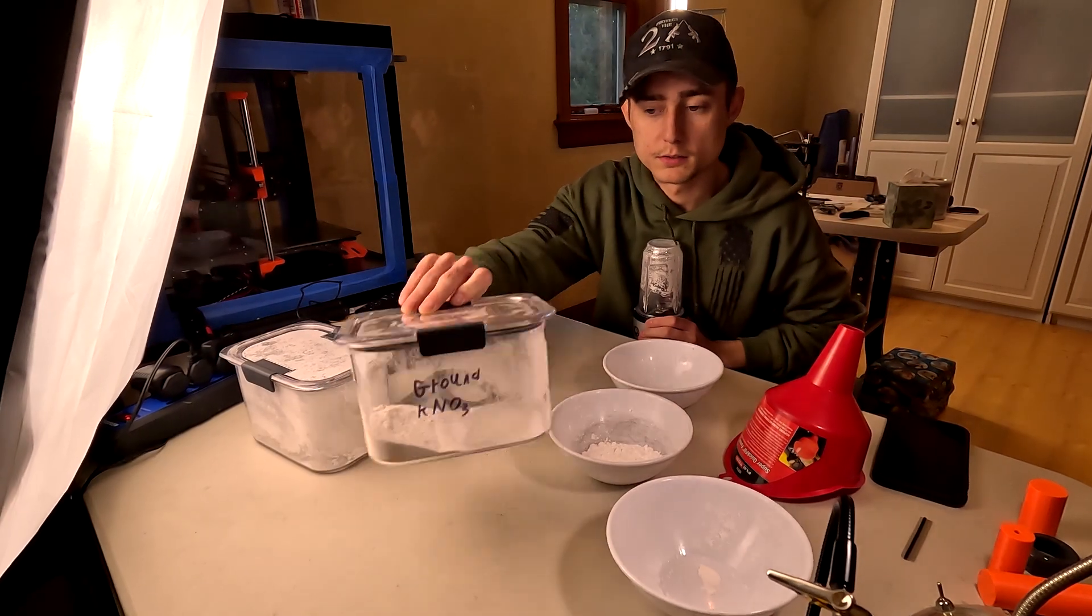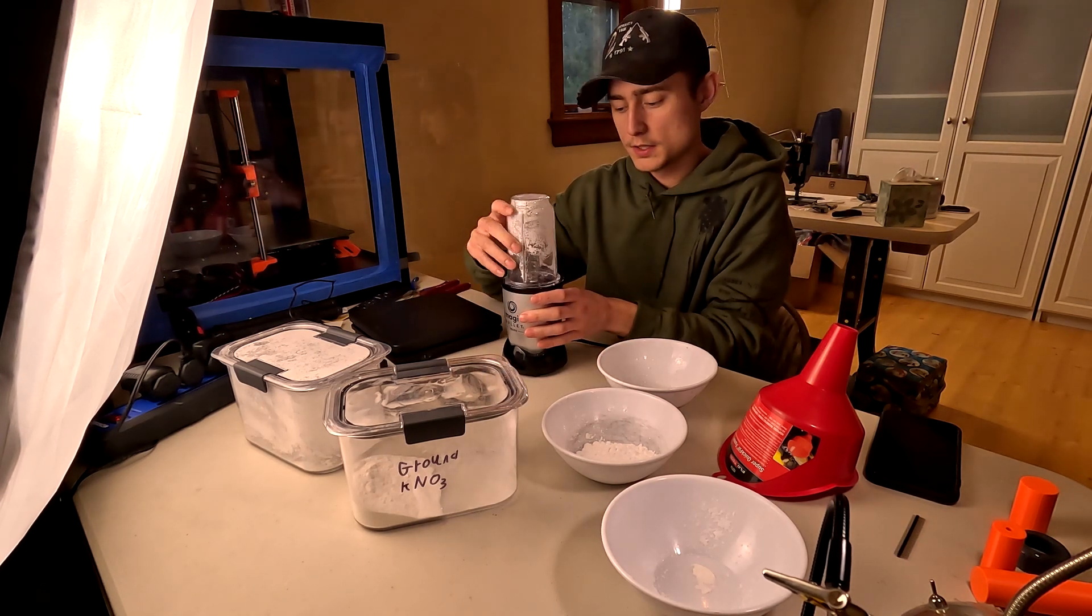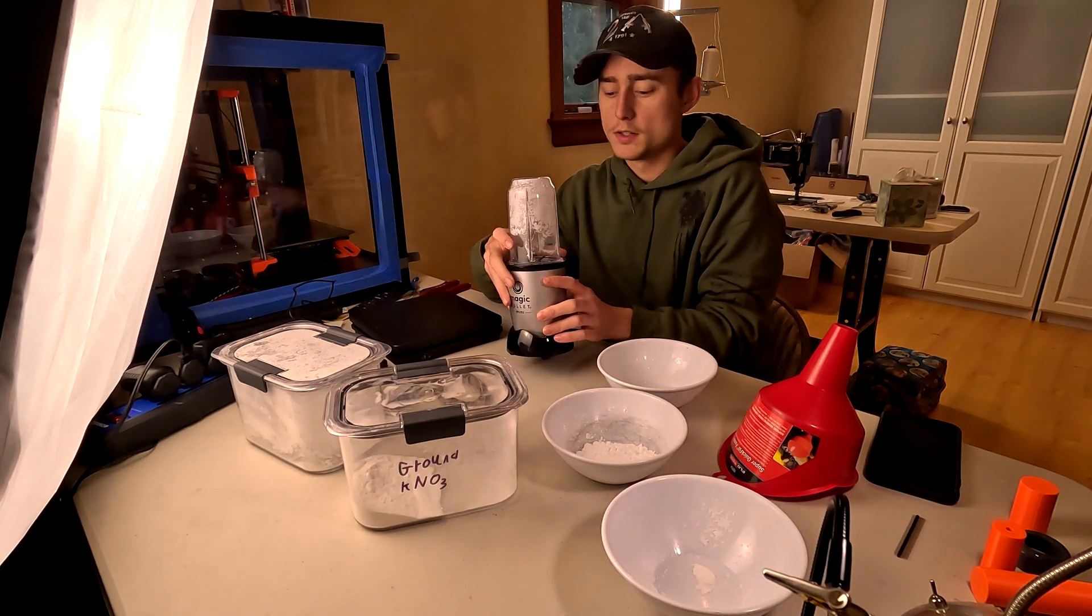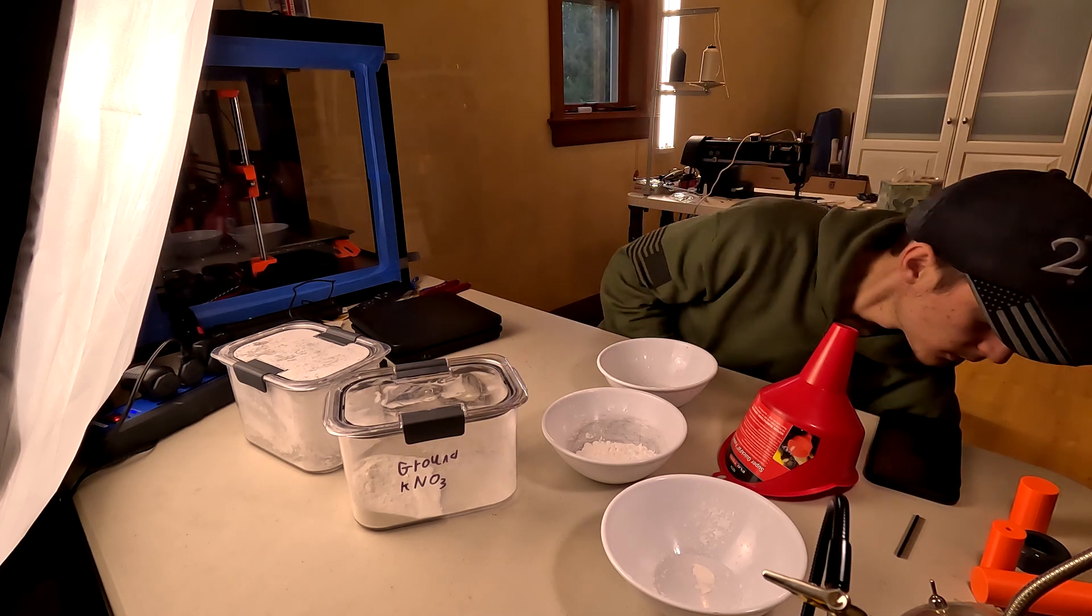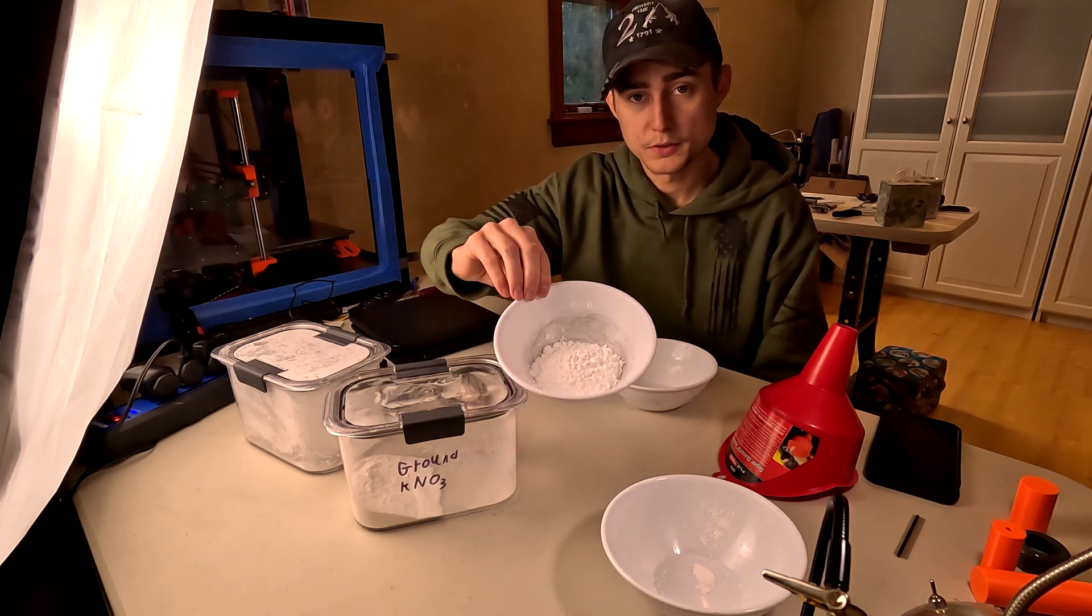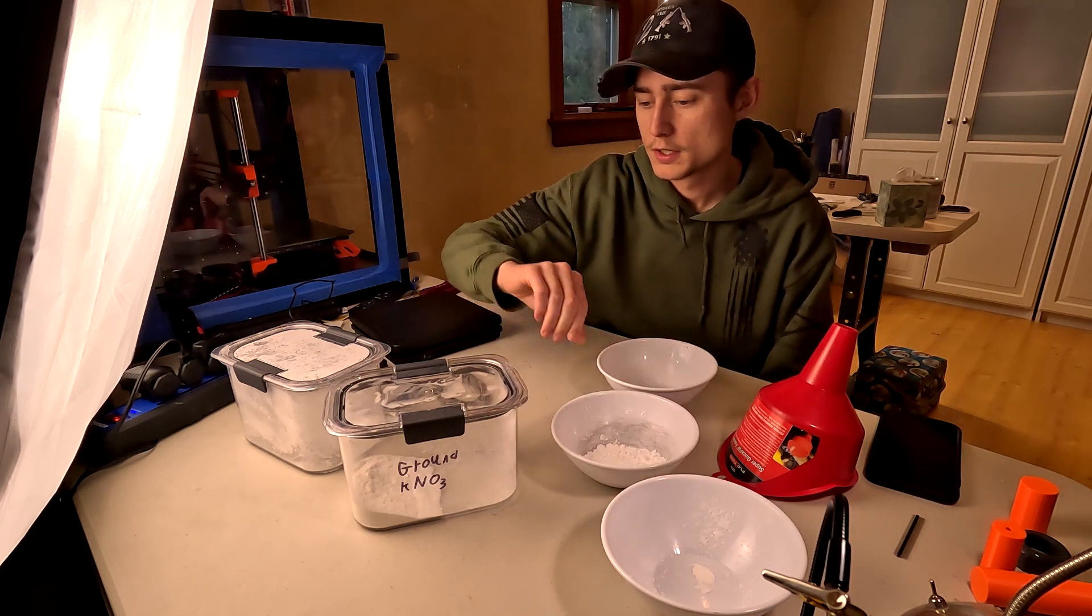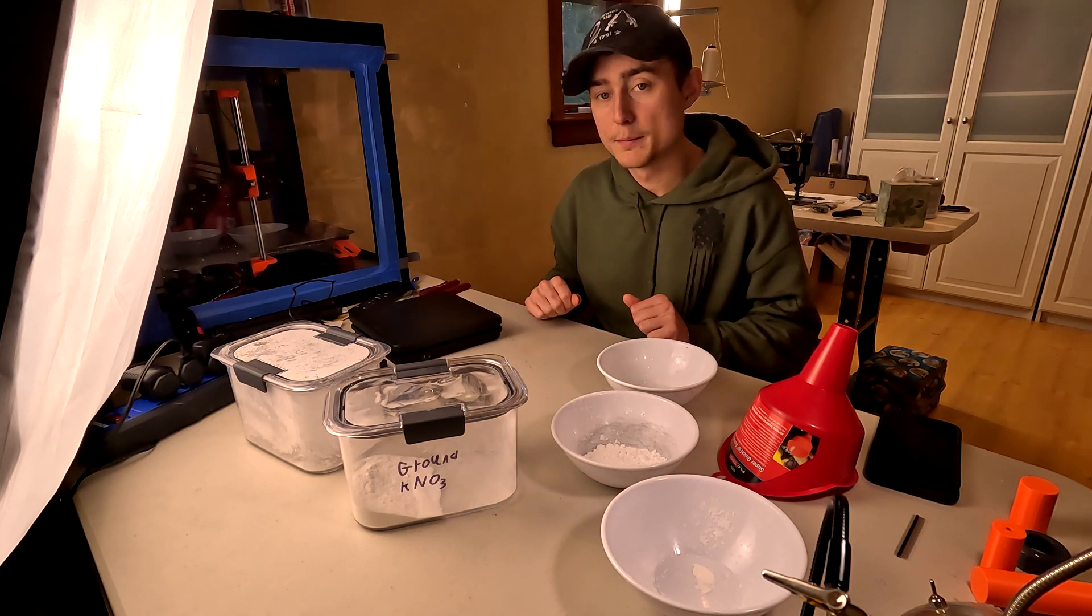So we got our ground potassium nitrate. I grounded it with just a blender. Any blender I think would do. So I already ground some up, let's see if that's enough. Once you ground this up, you gotta grab some powdered sugar, just normal powdered sugar, and then we gotta weigh them out, and then mix.